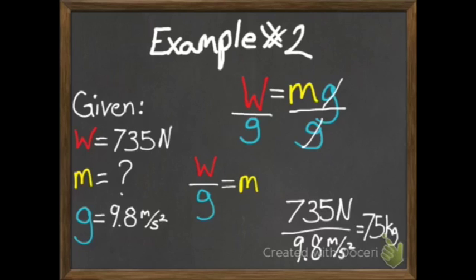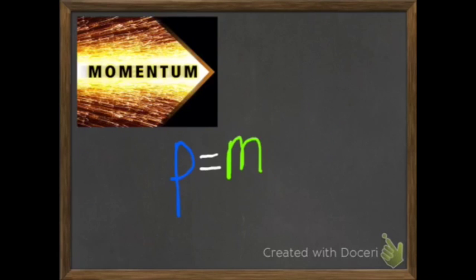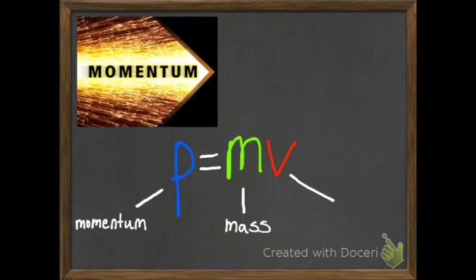That's an example of how to do a weight problem using W equals MG. Now we're going to look at how to do a momentum problem. Remember, the definition of momentum is the quantity of motion of an object. The equation is P equals MV, where P stands for momentum, M stands for mass, and V is velocity. We measure mass in kilograms, velocity in meters per second, and momentum in kilogram meters per second.